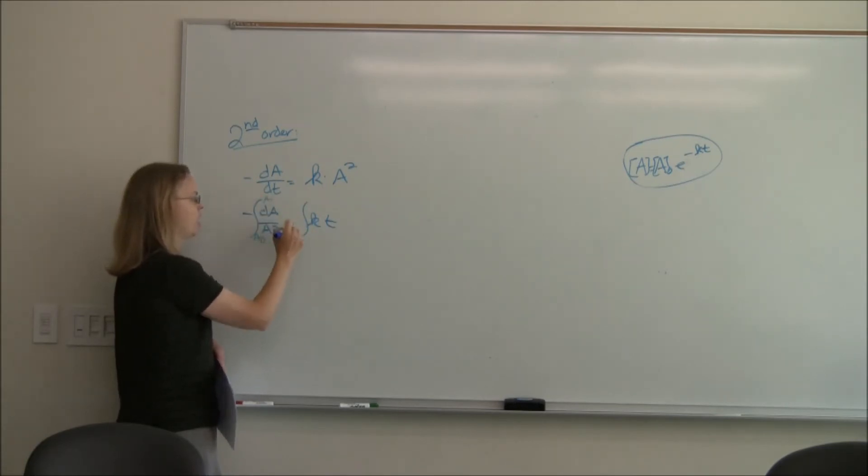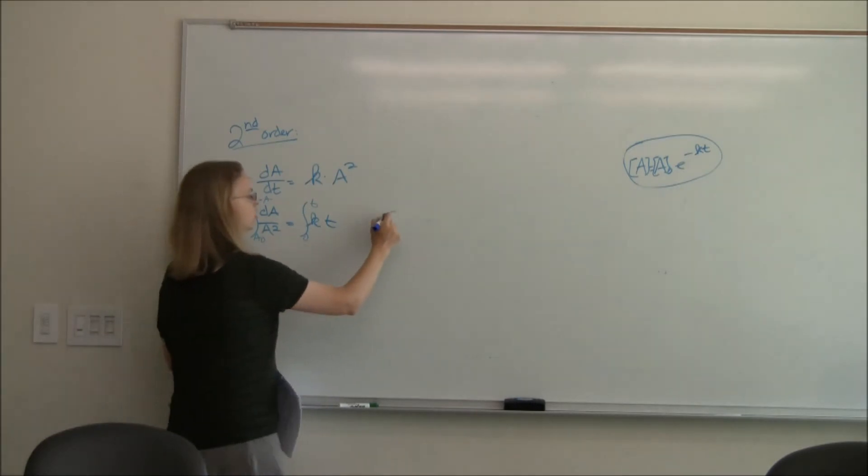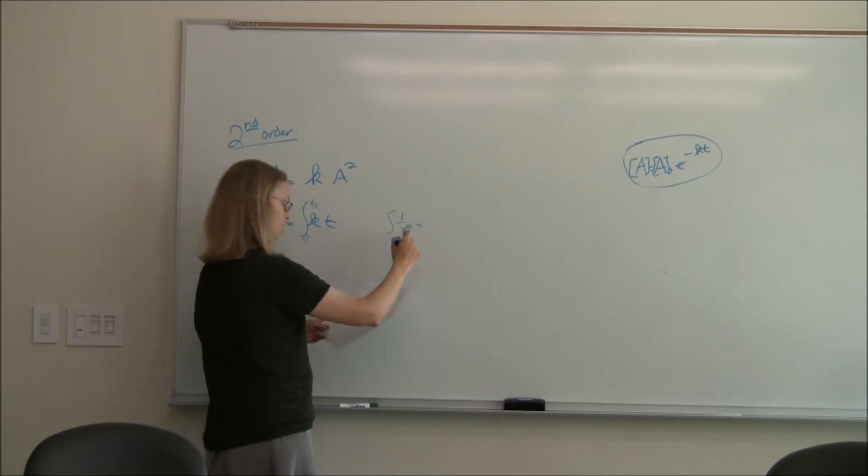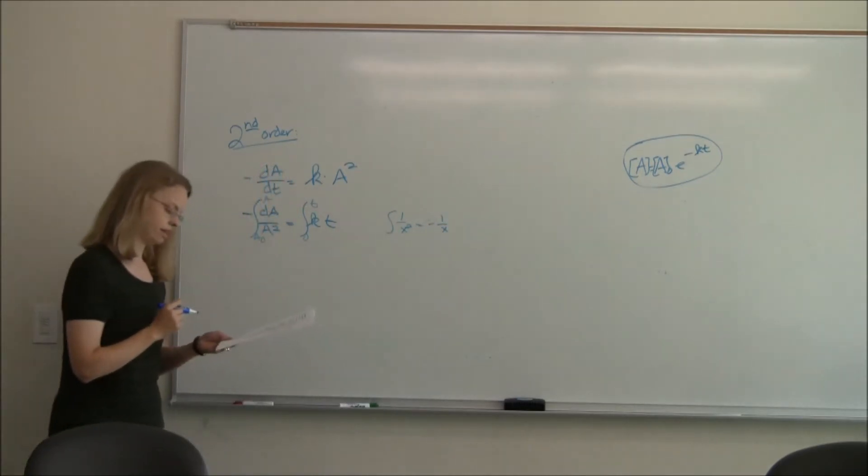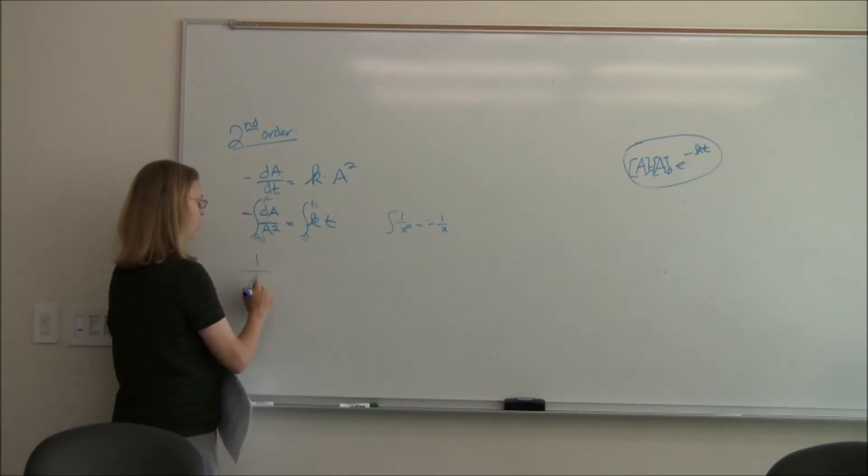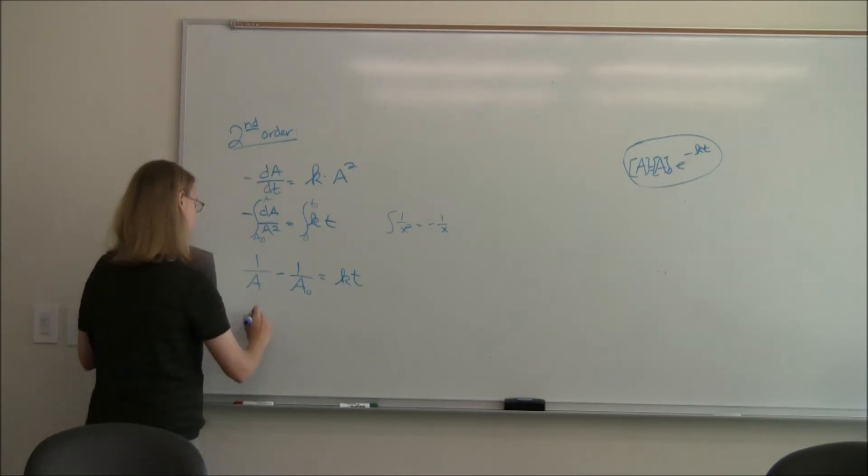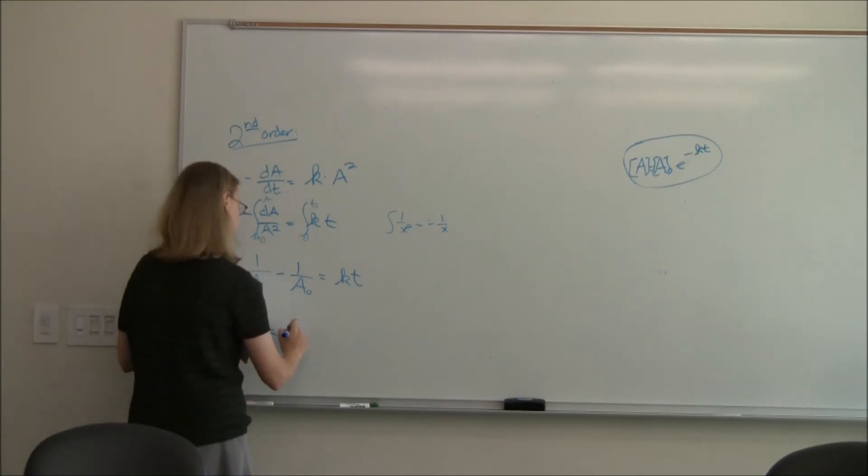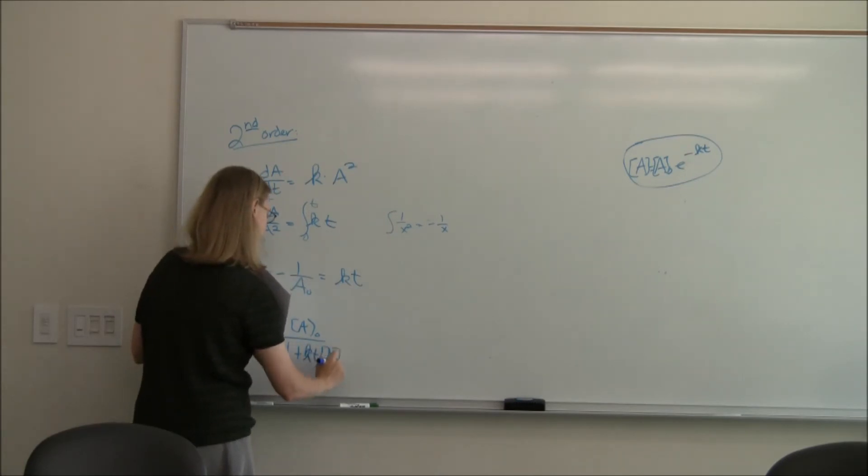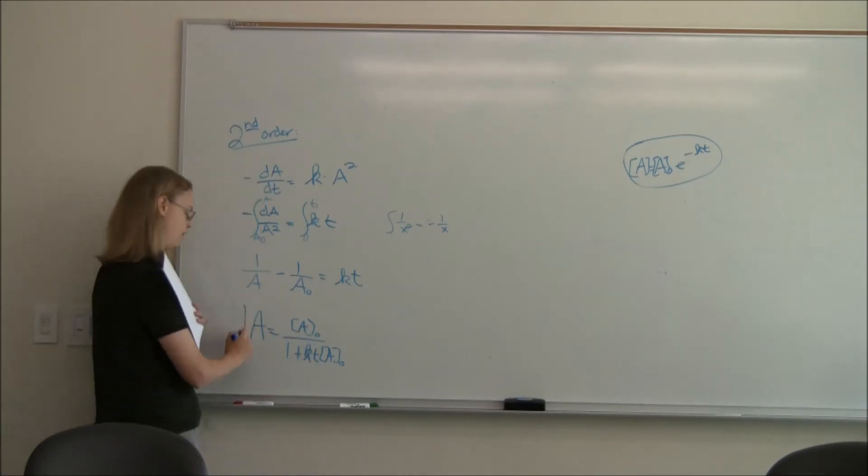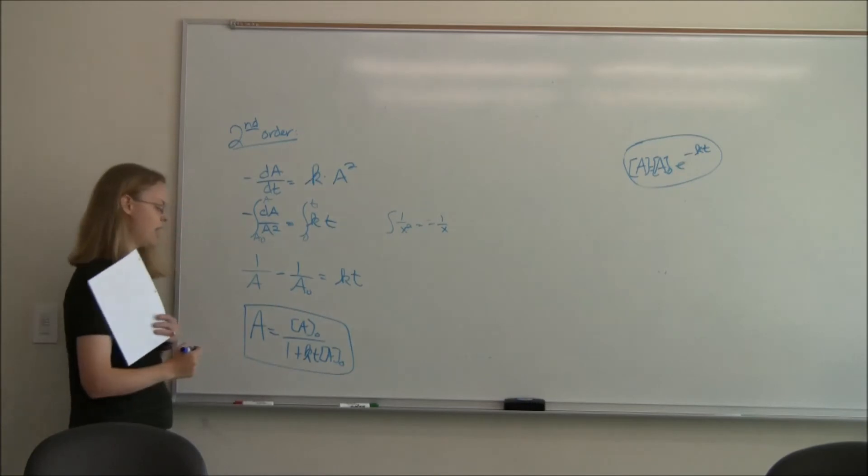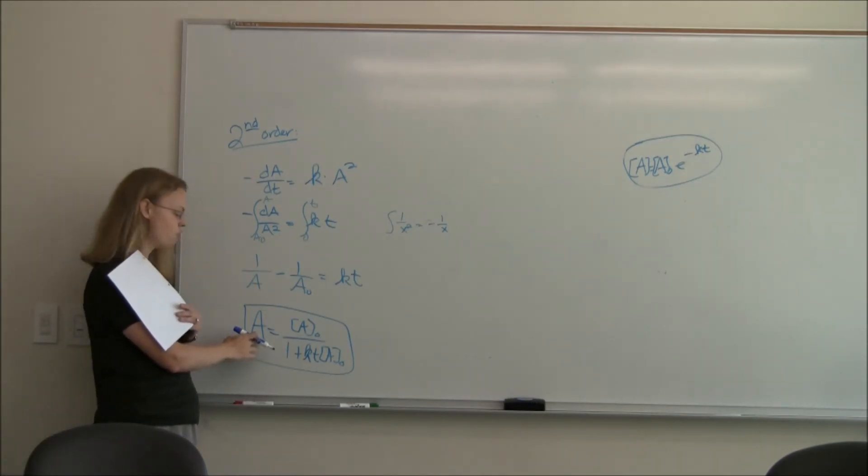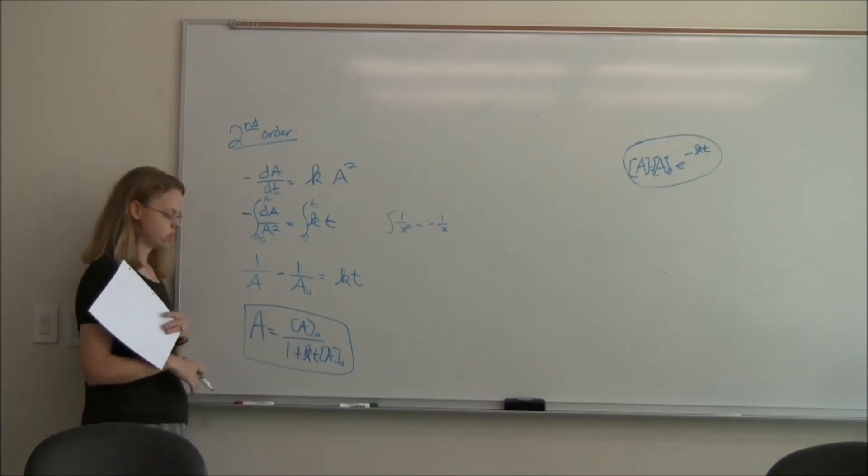So same rate that now, if I separate my variables, I'm going to get a one over A squared equals kt. I'm going to integrate them. Same thing from A zero to A, from zero to t. The integral of one over x squared ends up being minus the one over x. We haven't done integrals in a while. And so we end up getting this. One over A, if I put in my values, minus one over A zero is equal to kt.